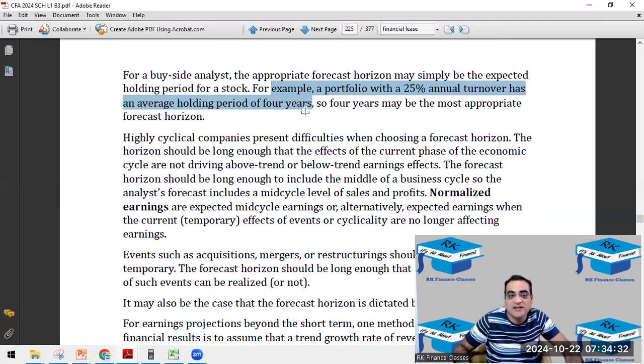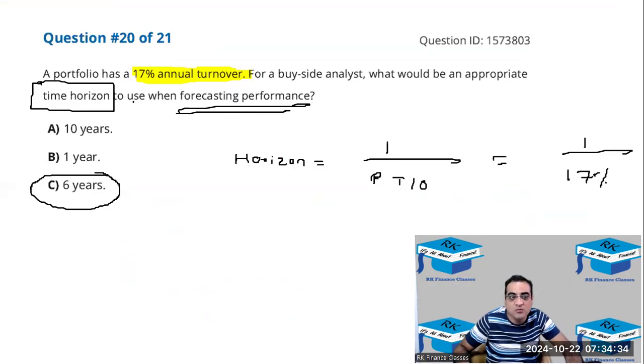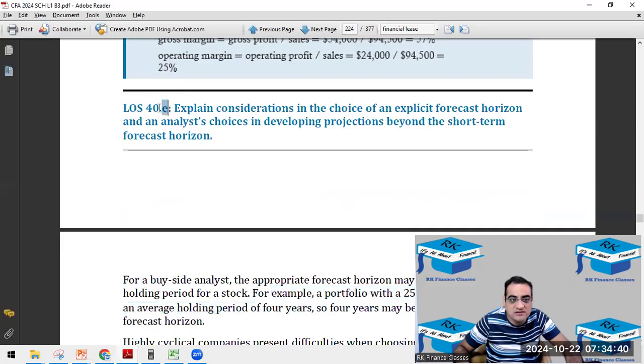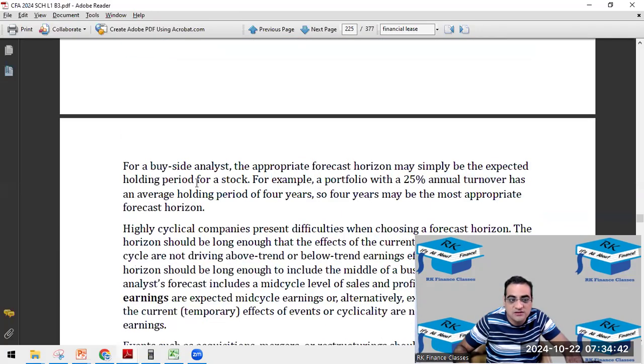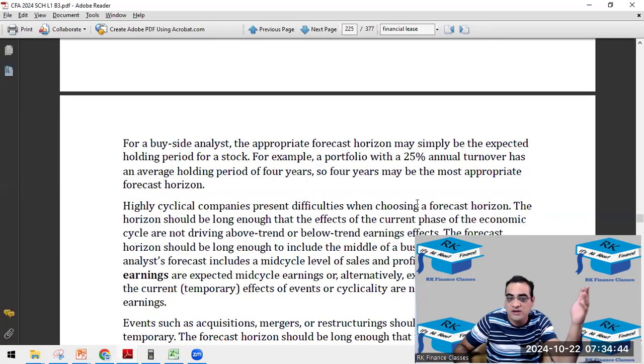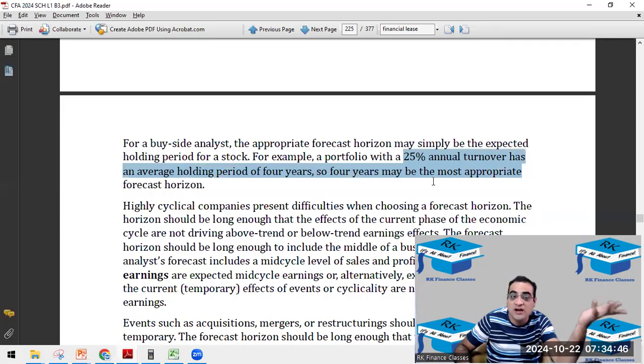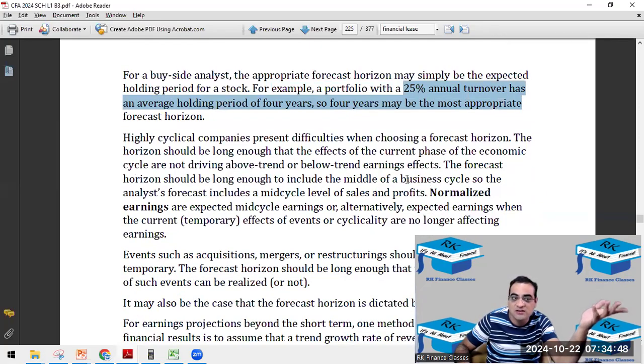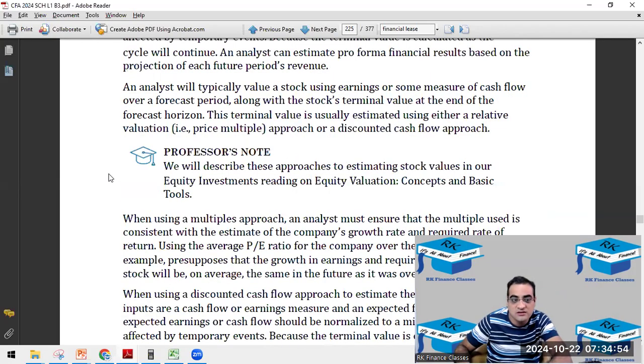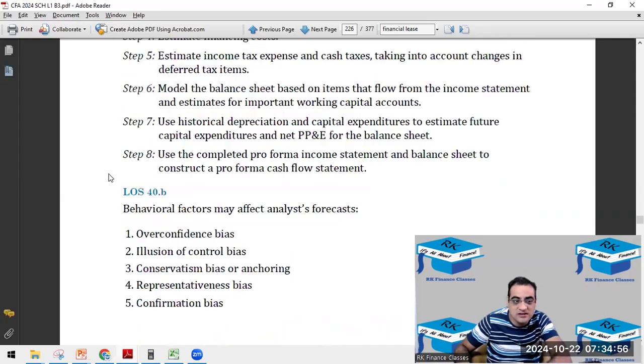See, over here a portfolio with 25 percent turnover has a holding period of four years, that is one upon 25 percent. In our case it would be the same - one upon 17 percent. It is there in LOS 40.e, just the first line. But let me see if it is in the key concept.